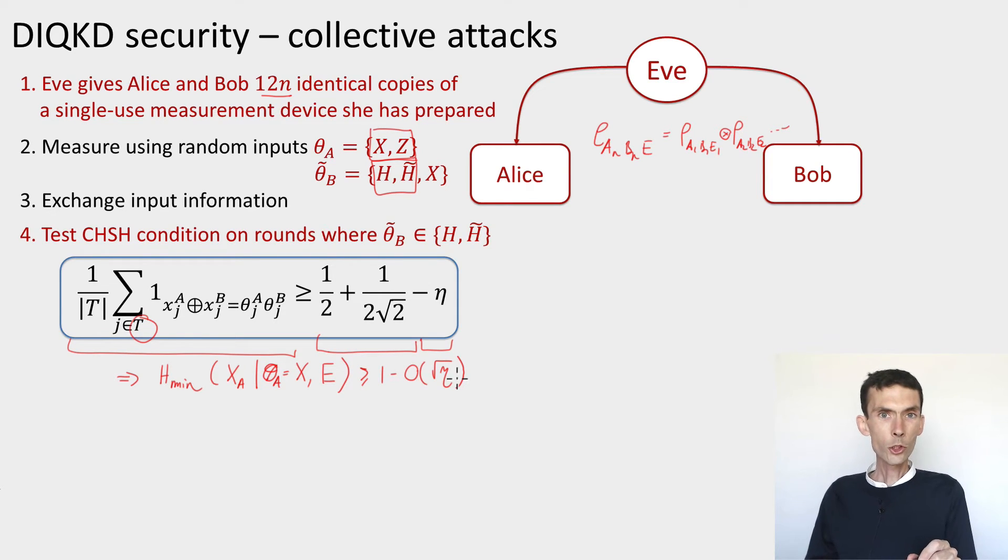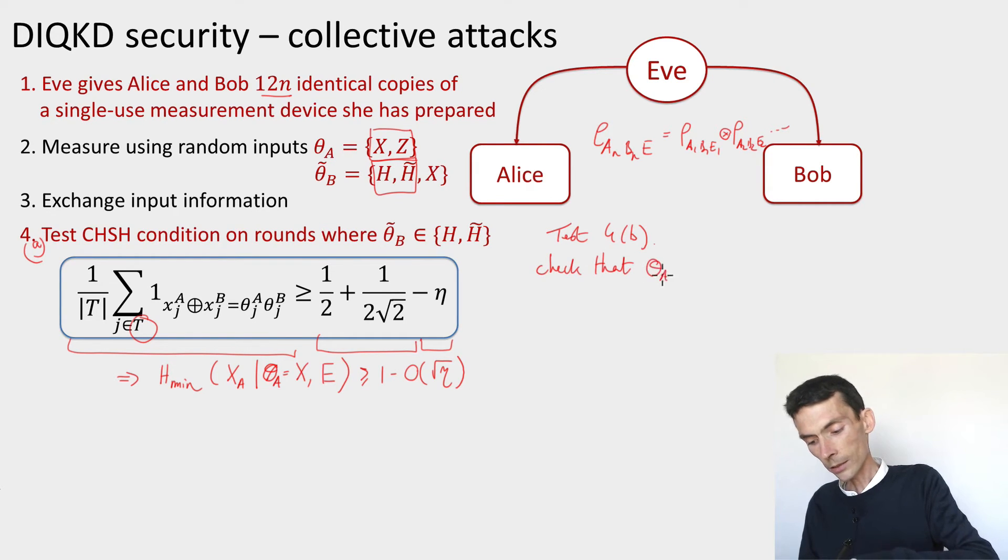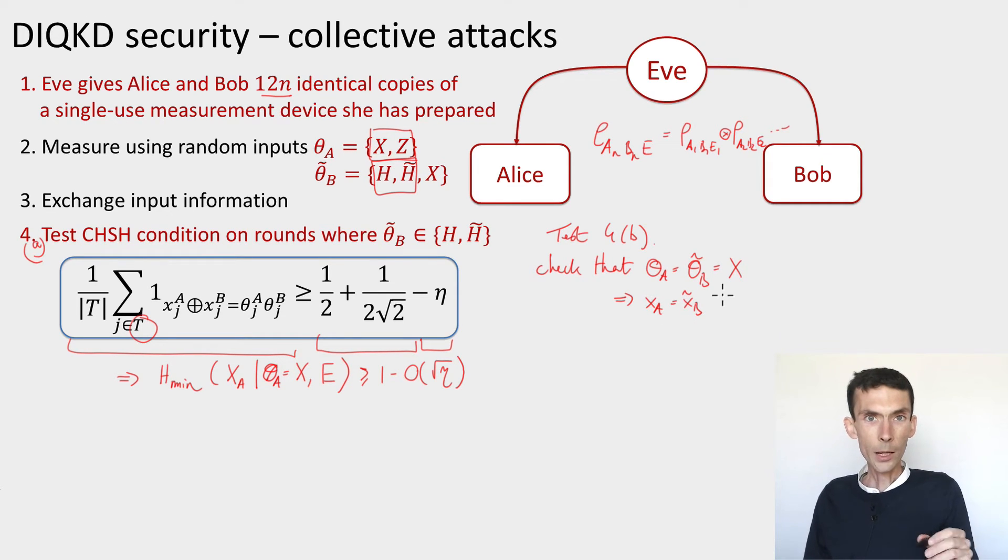We need to make one more check to make sure that Alice and Bob are going to get the same key. This was test 4a. We have a test 4b, which is to check that when theta_a equals theta_tilde_b equals x, then the outputs x_a equals x_tilde_b are equal, except maybe with probability eta. We allow a little bit of error here because these devices will never be perfect.